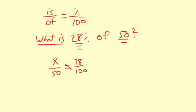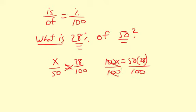To solve, you cross multiply: x times 100, we can just call that 100x, equals 50 times 28. Then you can divide both sides by 100. So x equals 50 times 28 then divided by 100.